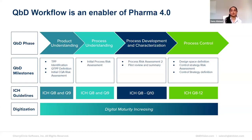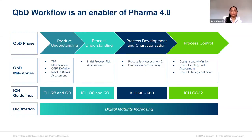QBD is actually based on ICH guidelines from QA onwards and underpinned by ICH Q9 throughout. By following this systematic workflow, you're also following the Pharma 4.0 principles. The ICH guidelines provide the principles of holistic QBD and guidance around QBD milestones in terms of the structure and content, and I'll touch on that now.